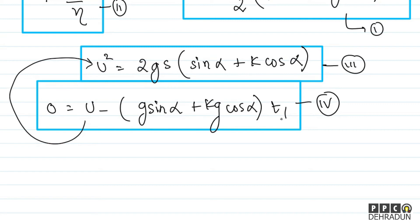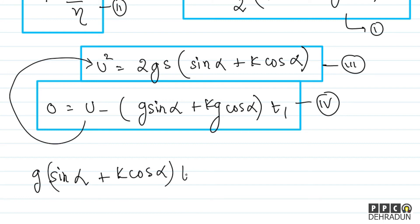Substituting u into the equation u² = 2gs(sin alpha + k cos alpha): [g(sin alpha + k cos alpha)·t1]² = 2gs(sin alpha + k cos alpha). Taking common factor g(sin alpha + k cos alpha)·t1² = 2s.